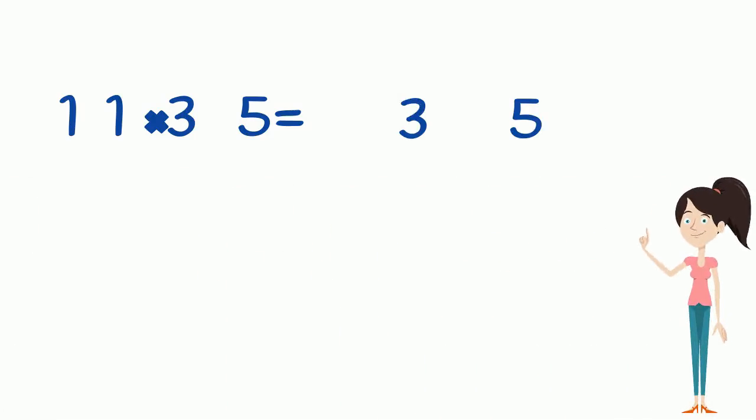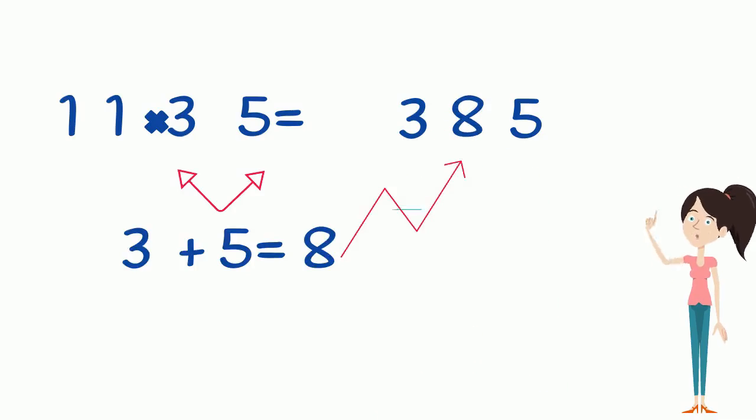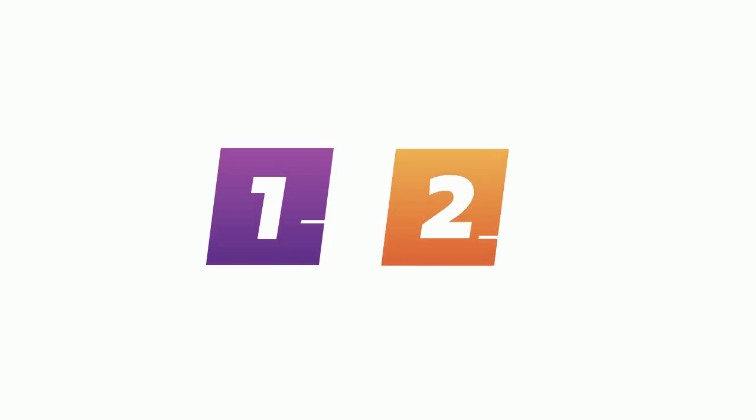So the same rule applies to bigger numbers. 11 times 35. I'll write number 35 and leave a gap in between the two digits, then add 3 and 5 together which equals 8, and I'll put that 8 right in the middle of the two digits. So the answer is 385. Now let's move to 12 timetables, and I'm going to show you a very simple trick.